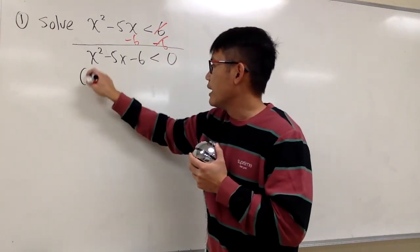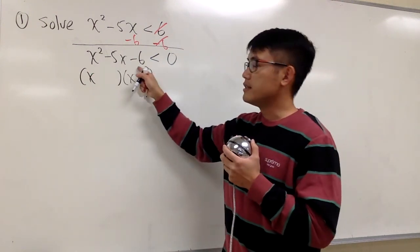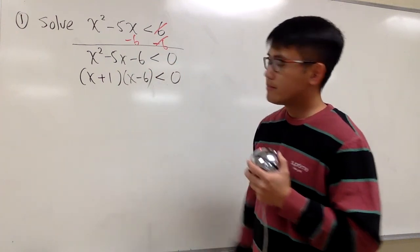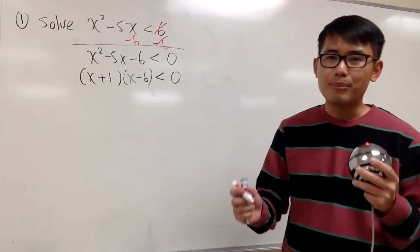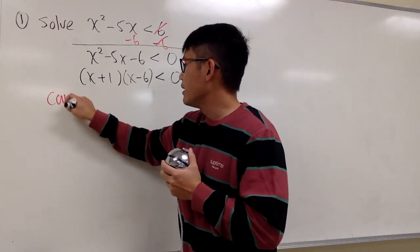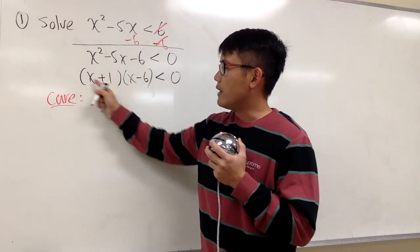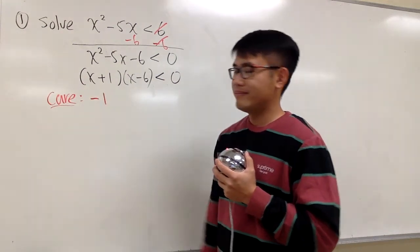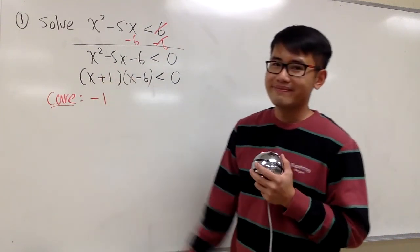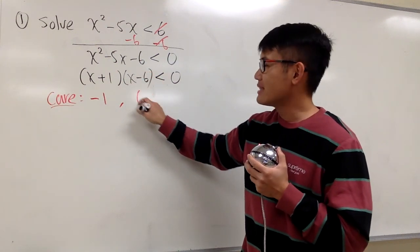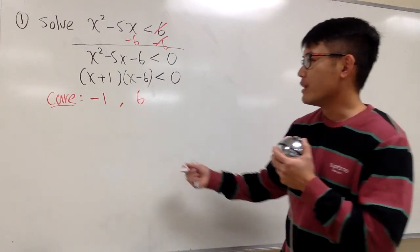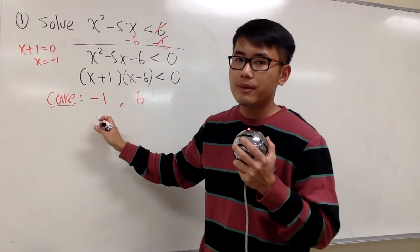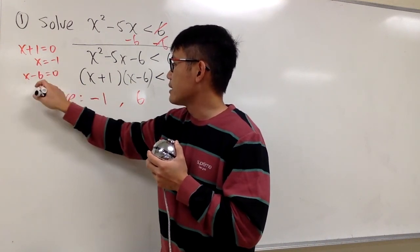Now let's factor this. We get (x)(x), and we need 1 times negative 6 to give negative 6, and they add up to negative 5. The combination is plus 1 and minus 6, giving us (x + 1)(x - 6) less than 0. We have two factors, and we need to find the critical numbers. For x + 1 = 0, x equals negative 1. For x - 6 = 0, x equals 6. Those are the two numbers we care about.